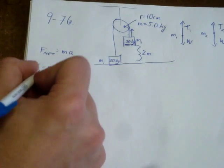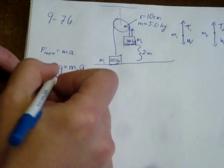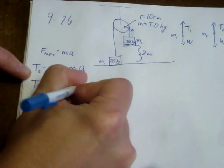For the other object, the 20 kilogram mass, we know that its tension up, in the positive direction, minus its weight down, M1 G, will equal its mass times its acceleration.